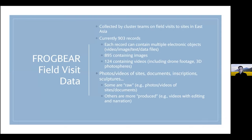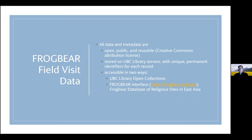These records can vary quite a bit in what they contain. Some you might think of as more raw, simply documenting what's at a site or in a document. Others have been produced for FrogBear — things like videos with editing and narration, like a short documentary. What's important about this data is that it and all the metadata describing it are open, public, and reusable under a Creative Commons attribution license, which means that anyone can access it publicly without an account, and it can be reused for any purpose as long as you maintain the attribution.